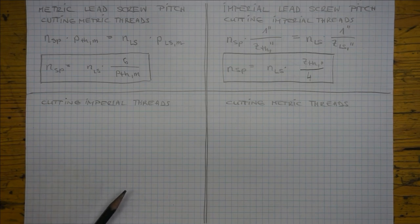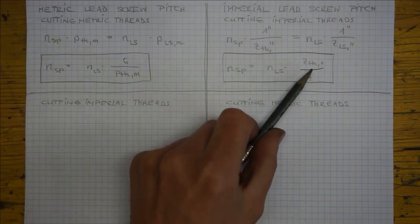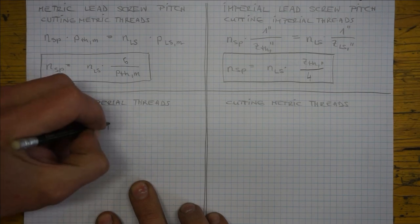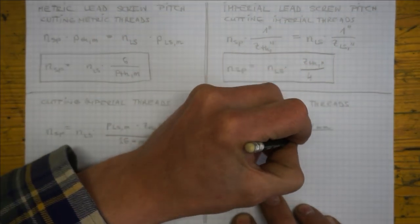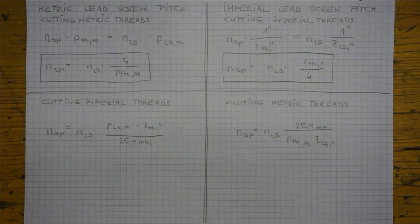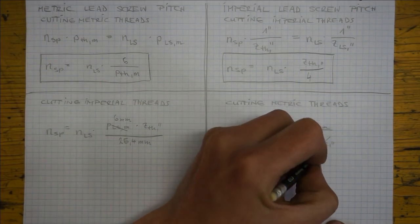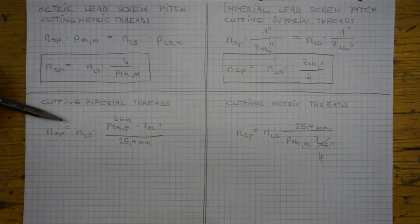But to explain this we need the threading condition again. To the left let's assume we are cutting imperial threads on our metric lathe. And on the right let's assume we are cutting metric threads on an imperial lathe. Now we just have to slightly modify the threading condition. That is here we have to replace PTH with ZTH and 25.4 millimeter. And here we have to replace ZTH with PTH and 25.4 millimeter. Again, in typical cases PLS equals 6 millimeters and ZLS equals 4 TPI.